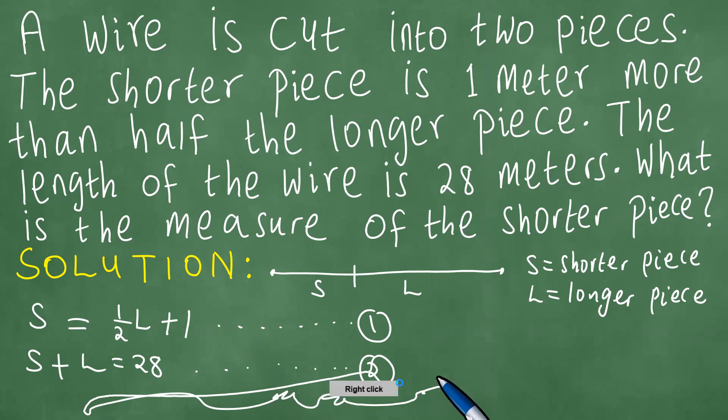So let's just continue. We have equation one and we have equation two. In other words, S equals one half L plus one is equation one, and we have S plus L, which is 28 meters, which is equation two.